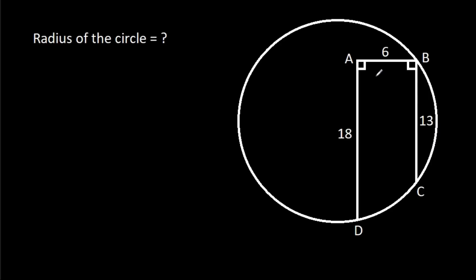In this video, we have been given that AB is 6, BC is 13, and AD is 18. Then we have to find the radius of the circle.